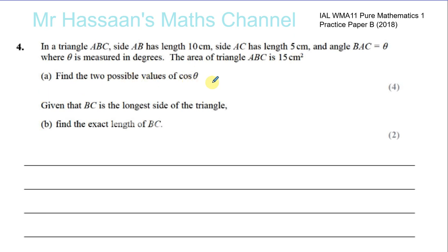Find the two possible values of cosine theta. The area of the triangle is fixed as 15, side AB is fixed as 10, side AC is fixed as 5, but the angle can vary because there are two possible values for the cosine of that angle.